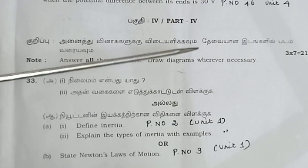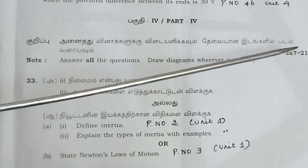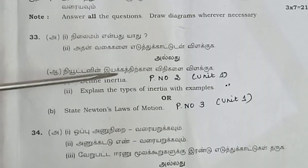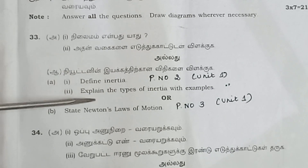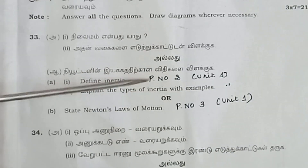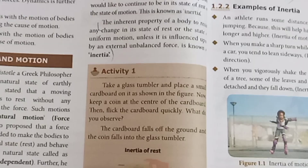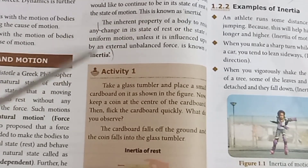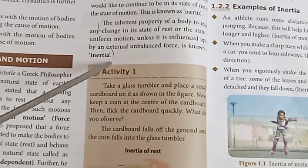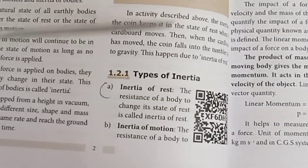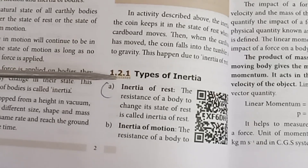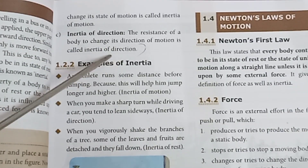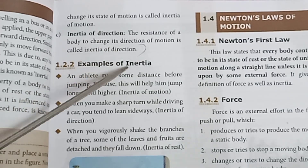Part 4: Answer all questions. Draw diagrams whenever necessary. 3 questions × 7 marks each. Question 33: Define inertia and explain the types of inertia with examples. Page number 2, Unit 1. Inertia is the inherited property of a body. Types: inertia of rest, inertia of motion, and inertia of direction.